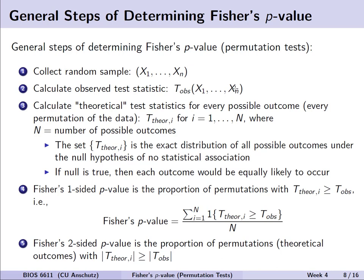Now in step 3, we calculate the theoretical test statistics for every possible outcome or every permutation of the data, where we shuffle all the data up for i equals 1 up to N possible permutations. This set of the t-theoretical is the exact distribution of all possible outcomes under the null hypothesis when we assume that there was no statistical association actually observed in the data. And if the null is true, then we would expect that shuffling up the data wouldn't actually really change our results. Any outcome could be equally likely to occur.